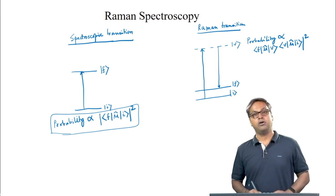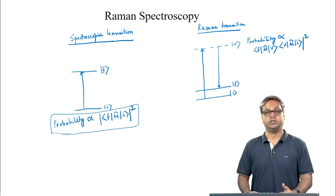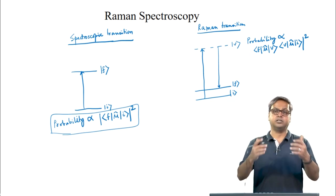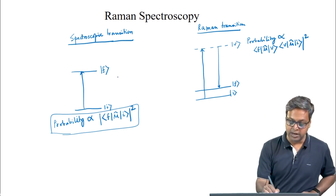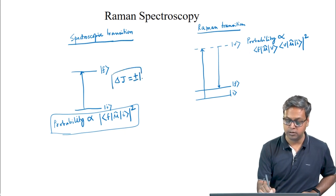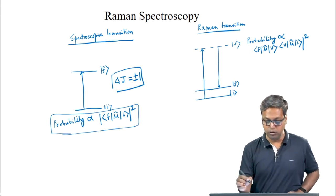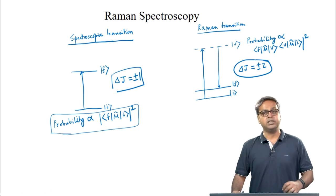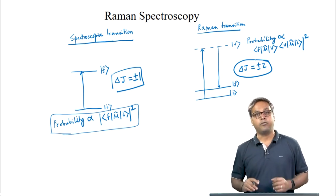Thus, the selection rules for Raman transition will be different from the corresponding absorption transition. When the initial and final states are rotational states, the selection rule for microwave or rotational spectroscopy is ΔJ = ±1. But in the case of rotational Raman spectroscopy, the selection rule will be ΔJ = ±2. We will discuss more on this in the next lecture, and we will end this lecture by solving a problem related to Raman spectroscopy.